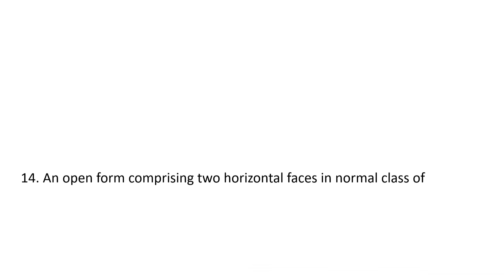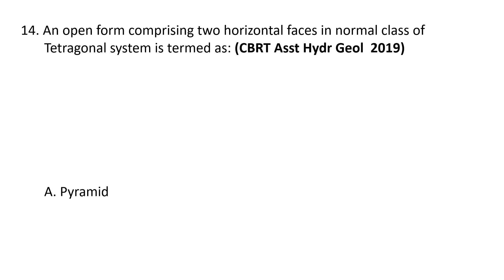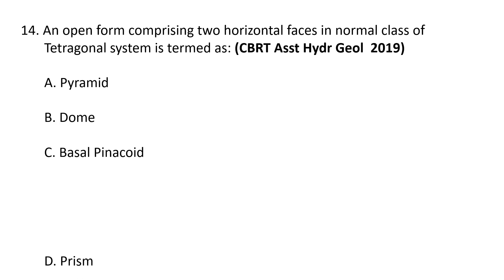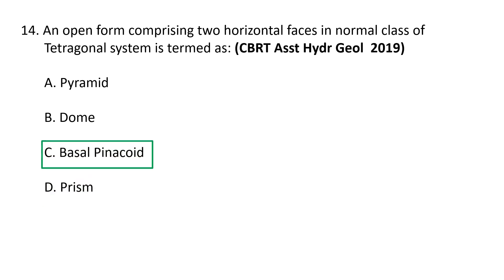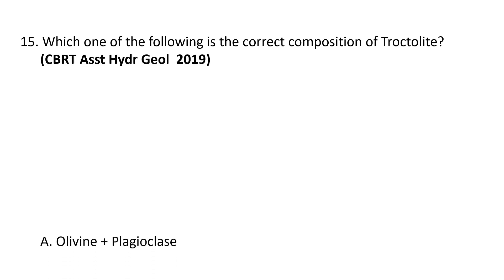Next question: an open form comprising two horizontal faces in the normal class of the tetragonal system is termed as: a) pyramid, b) dome, c) basal pinacoid, d) prism. An open form comprising two horizontal faces in the normal class of the tetragonal system is termed a basal pinacoid — two parallel faces which intersect only the c crystallographic axis, also called the base or basal plane. So c) basal pinacoid is the correct option.